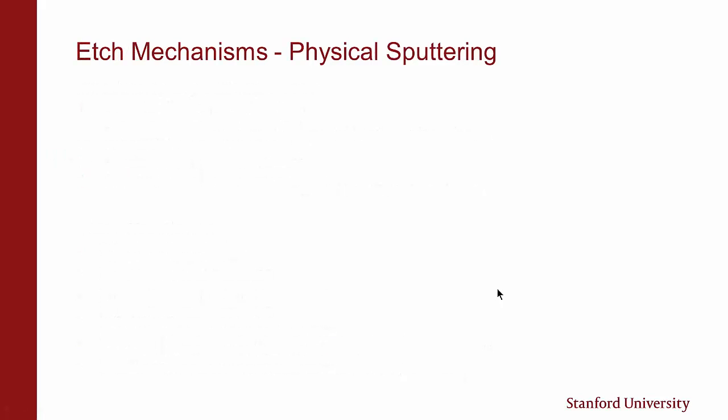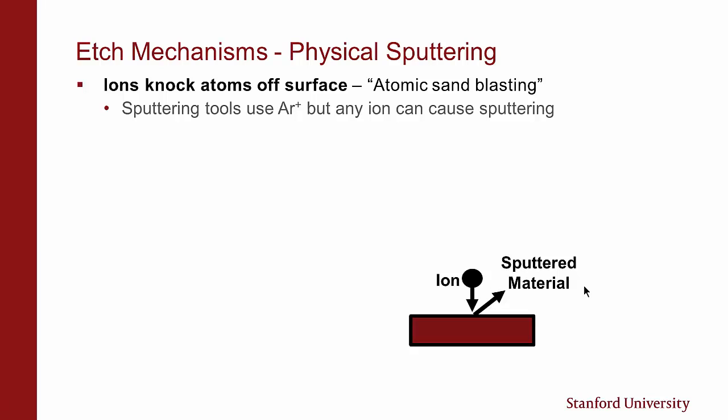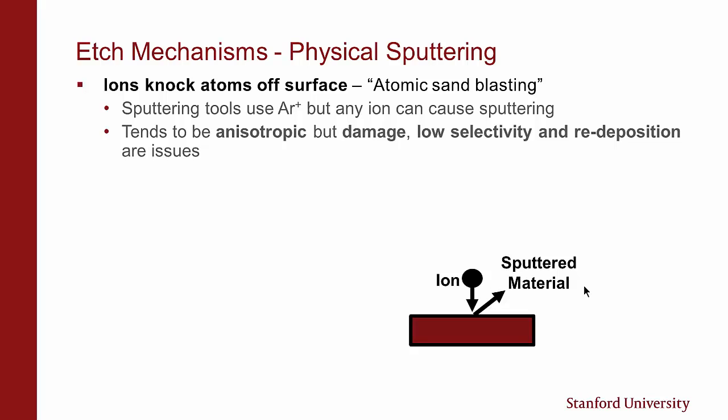Starting with physical sputtering — this is like ions knocking atoms off a surface, or it can be thought of as atomic sandblasting. The diagram shows an ion coming in and material coming off the surface. Sputtering tools typically use argon, though any ion can cause sputtering. We like argon because it has no chemistry and we tend to get higher ion fluxes with argon. Physical sputtering tends to be used for anisotropic etching, but has issues of damage, low selectivity, and redeposition.